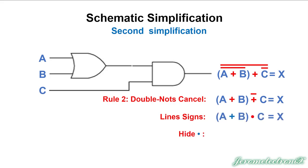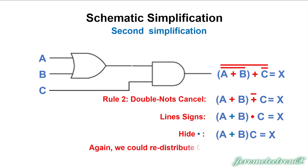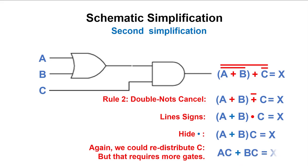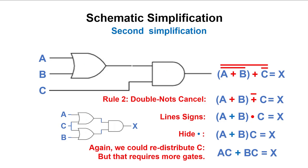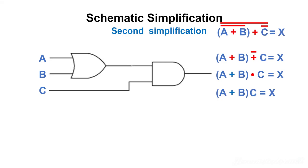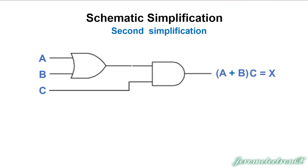We change the lines and the signs — there's only one line and sign, and we change that. Then we hide the multipliers. We could distribute that C through the parentheses, but again that requires more gates, and we want simple. So we opt for the fewer-gates version. Both the equation and the schematic now match each other: A plus B multiplied times C. We've made a simpler equation and a simpler schematic.